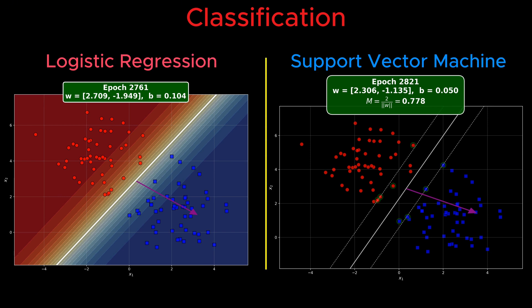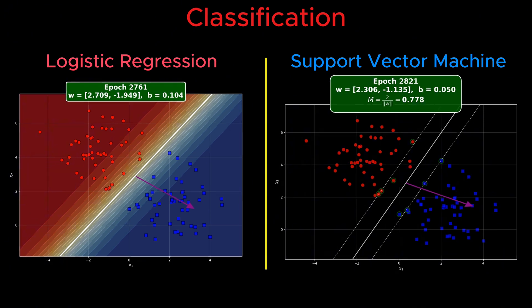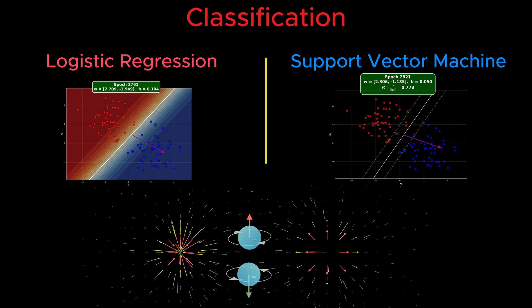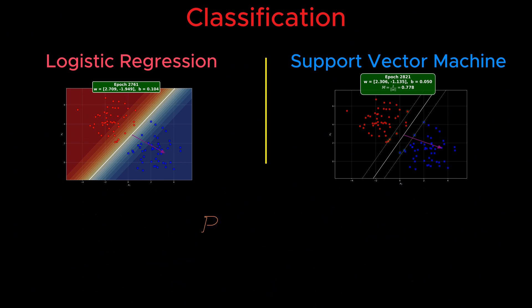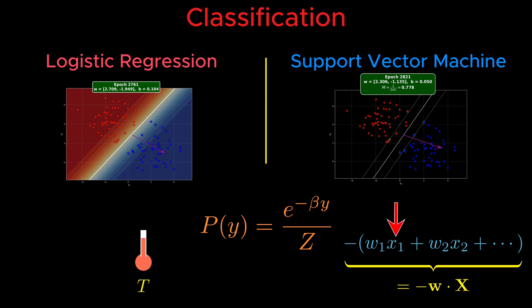From a probabilistic viewpoint, both of these models are deeply connected to a physical system known as a spin half particle in a magnetic field. A system that has only two possible energy states of up or down. In both physics and machine learning, we assign probabilities to these states using the same mathematical form. Here, beta plays the role of inverse temperature in physics. And in machine learning, it corresponds to the weighted sum of data points.